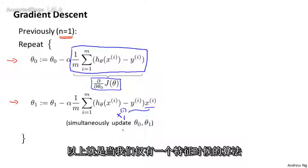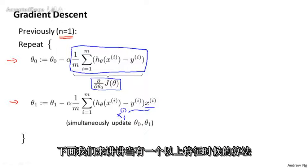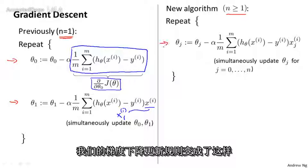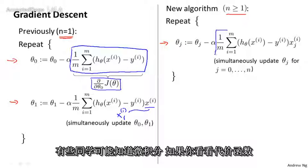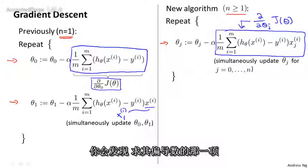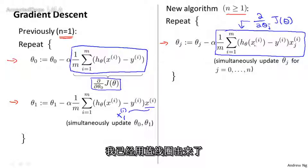So that was for when we had only one feature. Let's look at the new algorithm for when we have more than one feature, when the number of features n may be much larger than one. We get this update rule for gradient descent. And maybe for those of you that know calculus, if you take the definition of the cost function and take the partial derivative of the cost function J with respect to the parameter theta j, you find that that partial derivative is exactly that term that I've just drawn the blue box around.